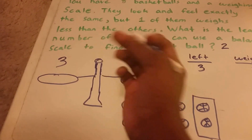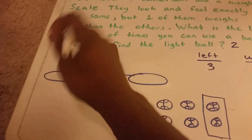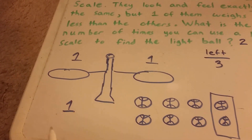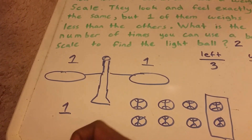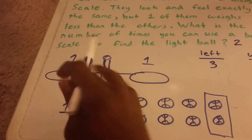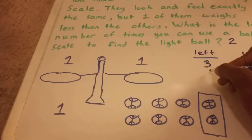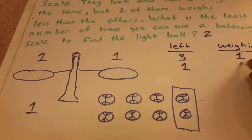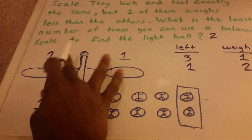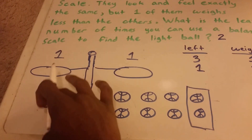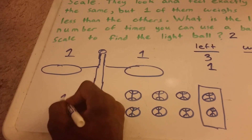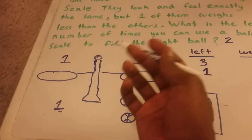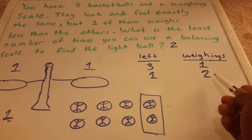Now we split these three balls: one on each side of the scale, and one left off the scale. If these two on the scale are equal, then we know it's the ball left off — one ball left and we know the answer. Two weighings. But if those two are not equal, then one of them weighs less — we still have that one extra ball off the scale but we already know which one is lighter. That's also only two weighings.